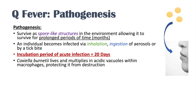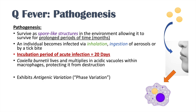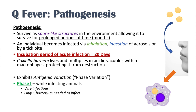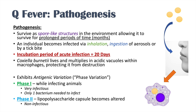Coxiella burnetti lives and multiplies in acidic vacuoles within macrophages. When you get infected, your macrophages engulf the bacteria but can't destroy it — the bacteria gets trapped in autophagosomes and autolysosomes, where it is protected from destruction. Coxiella burnetti also exhibits antigenic or phase variation: phase 1 is when it is infecting animals and is very infectious — it can infect with even just one bacterium. Phase 2 is when its lipopolysaccharide capsule becomes altered, making it non-infectious.